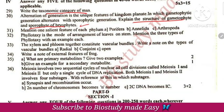Salient features: body with pores, it is AOS — Asconoid type, Osculum, water canal system. Metamerism and nephridia are excretory organs in annelids. Jointed legs and Malpighian tubules are excretory organs in arthropods.